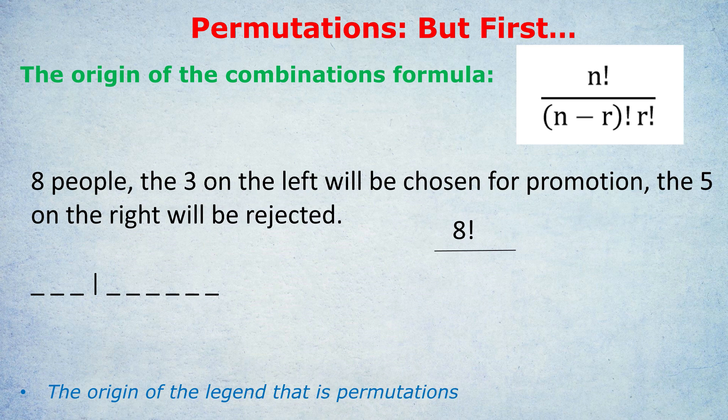So this eight factorial is pretending like each of those combinations, A, B, C, C, A, B, C, B, A, is a different one. But we know that's not true, because each of those combinations, C, A, B first in the queue, A, B, C first in the queue, still ends up with the same three people, A, B, and C, being chosen for promotion.